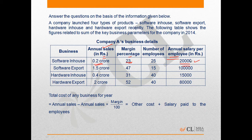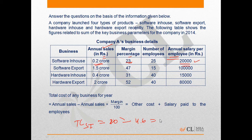Total cost of any business for a year is given as: annual sales minus (annual sales × margin / 100) plus other costs plus salary. Total cost for software in-house in 2014 was annual sales of 0.2 crore (20 lakh) minus 23% of annual sales. 23% of 20 lakh is 4.6 lakh, which comes out to 15.4 lakh. So total cost of software in-house was 15.4 lakh in 2014.